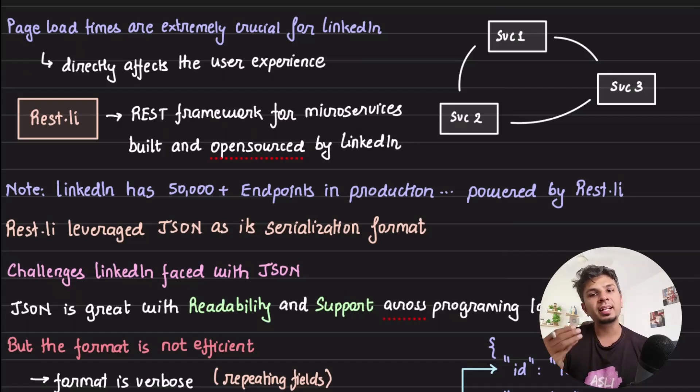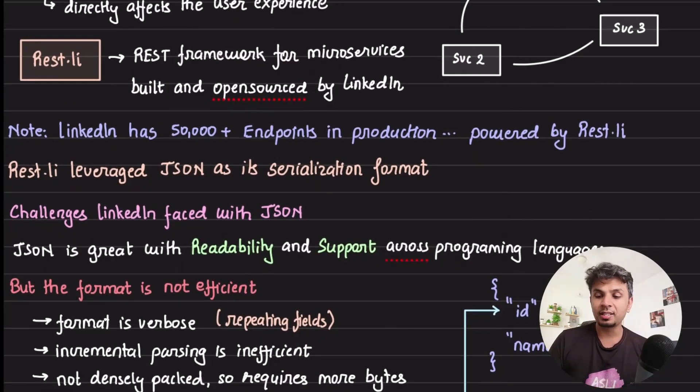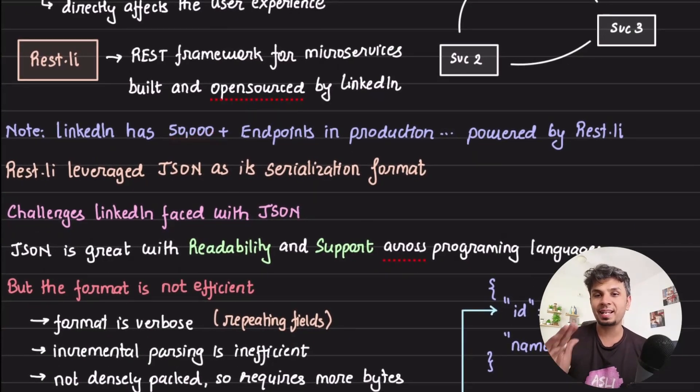What they have is a ton of microservices. They use a framework called REST.li to power the microservices. This framework is built by them and they have also open sourced it. In production they have more than 50,000 plus endpoints - just imagine the sheer scale that they have, which is just powered by REST.li.